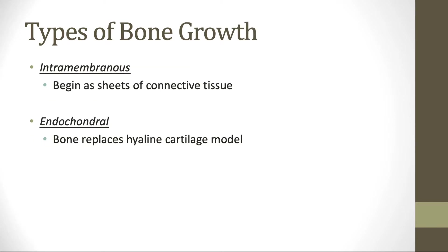There are two main ways that your bones grow or form. There's intramembranous bone growth, in which the bones begin as sheets of connective tissue and then the bone will form within the membrane — intra meaning within membrane. And then there's endochondral bone growth, which occurs inside of a cartilage model, where the bone is going to replace a hyaline cartilage model. Most of our bones, specifically our long bones, are endochondral in the way that they grow.